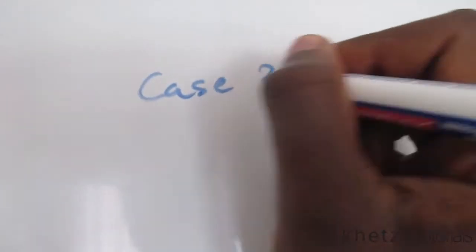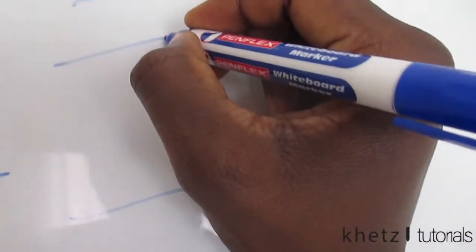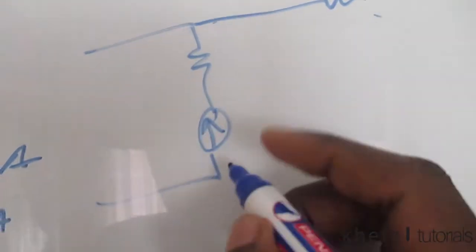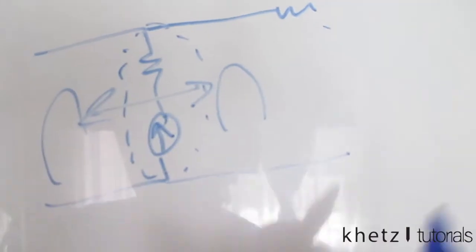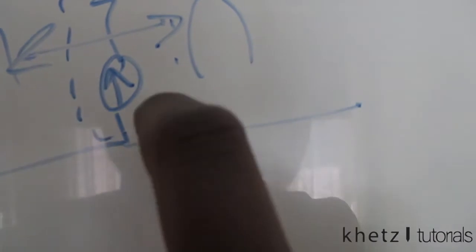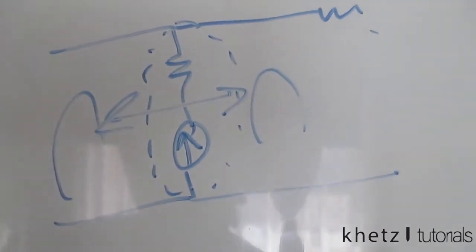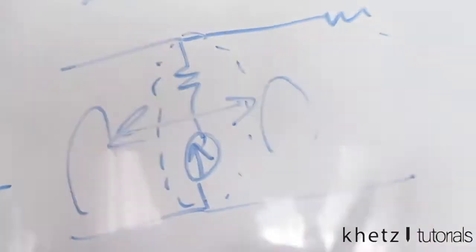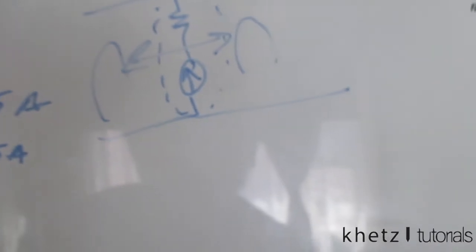Case two is where two meshes share a current source between them. In this case we're going to have something called a super mesh — the two meshes combine to form one equation. You'll have an equation relating the current source to the two mesh currents. You basically ignore the current source and any elements in series with it, so if there's a resistor in series with it, you omit all of that.